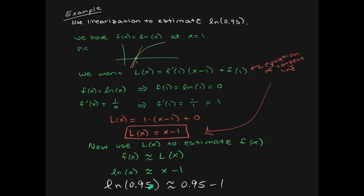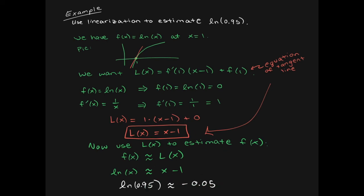Let's plug 0.95 into the equation of the tangent line. We get 0.95 minus 1, which is very easy to calculate without a calculator. We've estimated using only linearization and calculus that ln of 0.95 is approximately negative 0.05. The actual value of ln of 0.95 is approximately negative 0.051, so we got pretty close by using the equation of the tangent line.